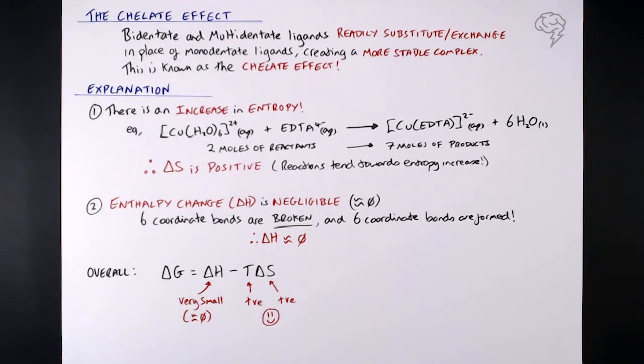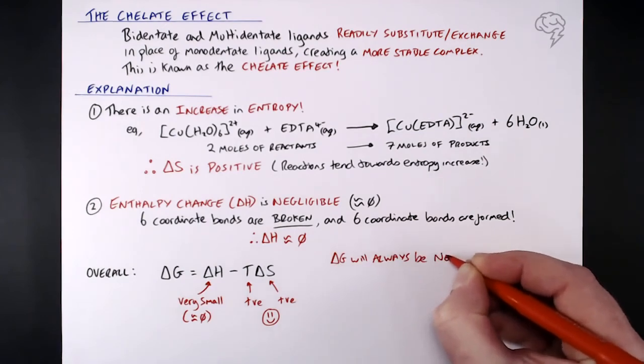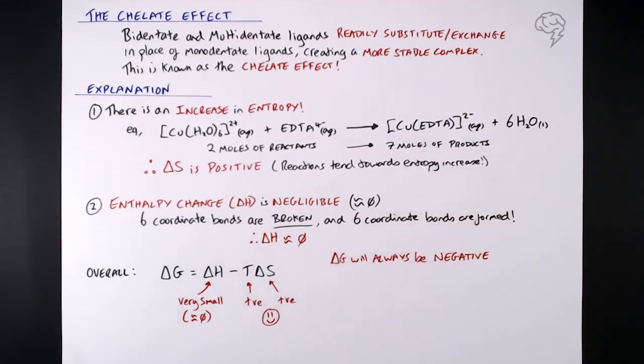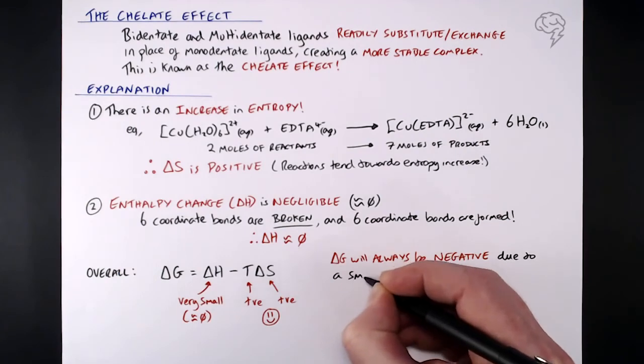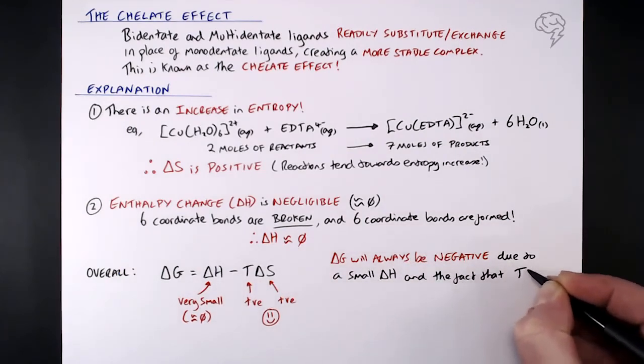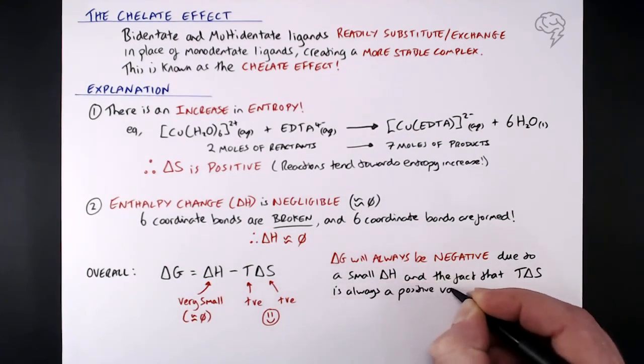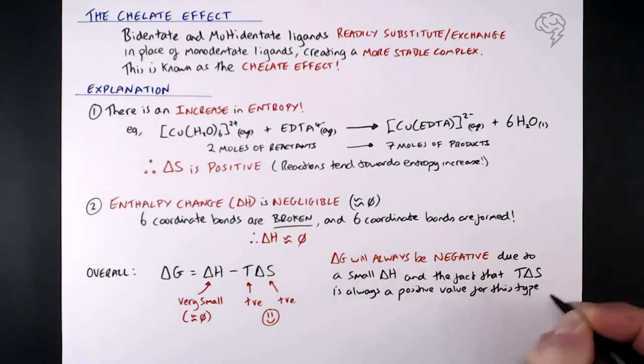Well, if you get that really small number and you're taking away temperature, which is always going to be a positive value because it's in Kelvin, and our delta S, as we've already shown, is always positive when you're swapping a bidentate or multidentate ligand for six individual monodentate ones, then it's always going to be negative. Let's say delta H is even plus 10. Well, if you take away temperature times the increase in entropy, it's going to be a negative number. So you know what? 99.999 times out of 10, this is going to be a negative value for delta G.